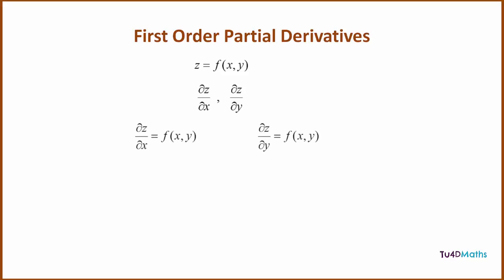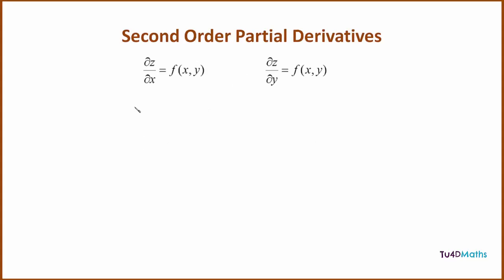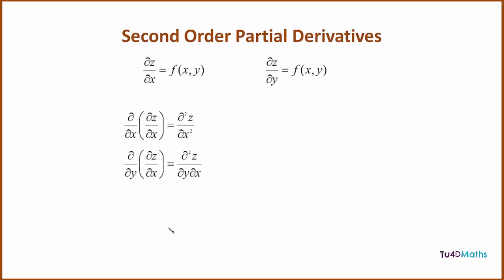Now these two partial derivatives are themselves functions of x and y, so that means we could differentiate them a second time to give a second-order partial derivative. So if we take the first partial derivative dz/dx and differentiate with respect to x keeping y constant, we get d²z/dx². If we differentiate with respect to y keeping x constant, we get d²z/dy·dx. Similarly, taking dz/dy and differentiating with respect to x gives d²z/dx·dy, and with respect to y gives d²z/dy².